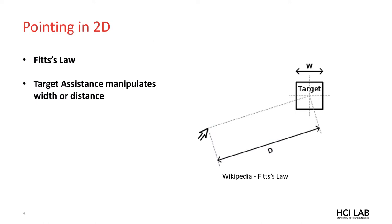HCI also has a long history of studying ways to assist selecting targets in a variety of contexts, but most frequently has been studied in 2D desktop pointing scenarios. Fitts law tells us that the difficulty of a pointing task is related to the width of the targets and the distance from the starting point to the target. So target selection techniques have been proposed that manipulate target size and distance to make target selection faster and less error prone.